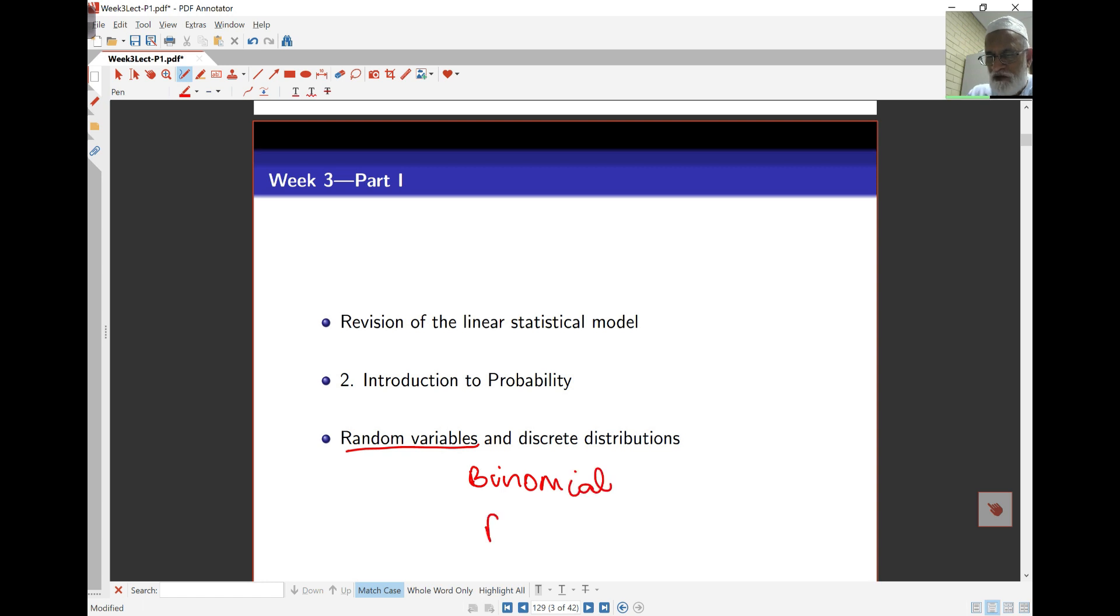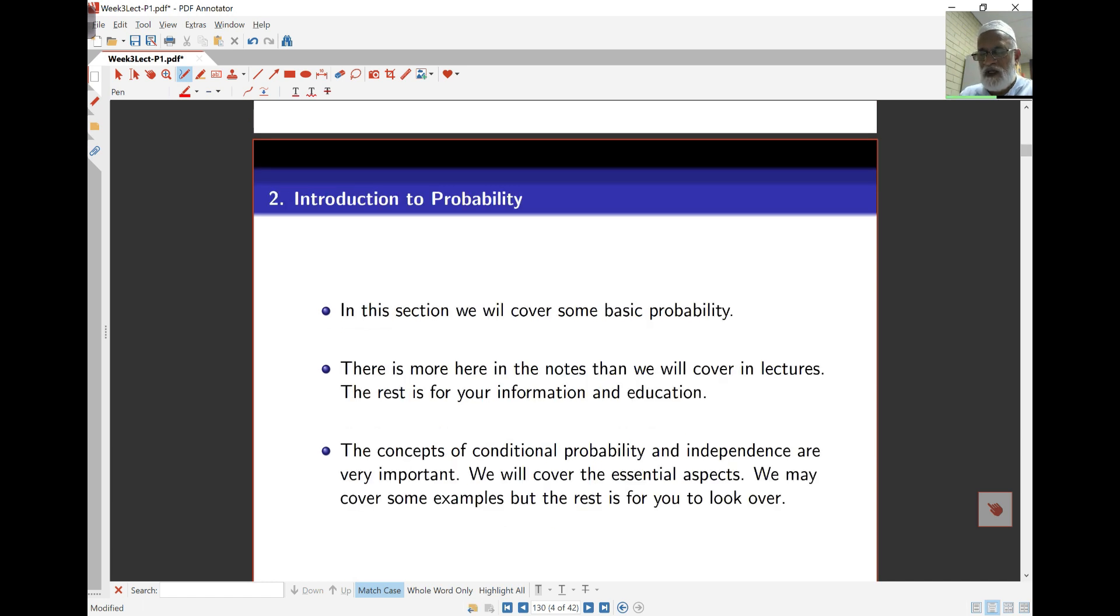And the Poisson distribution. These have similarities and differences as well. We'll see how they work as we go through. So we'll cover basic probability ideas, look at some problems, and move to the next section on random variables.